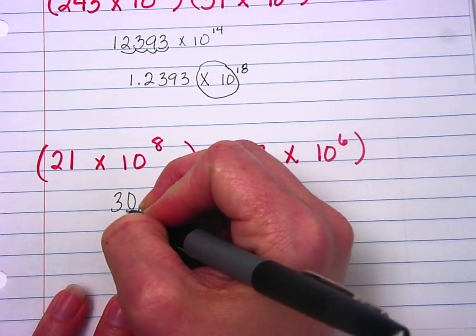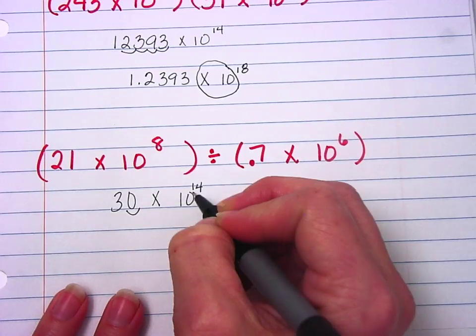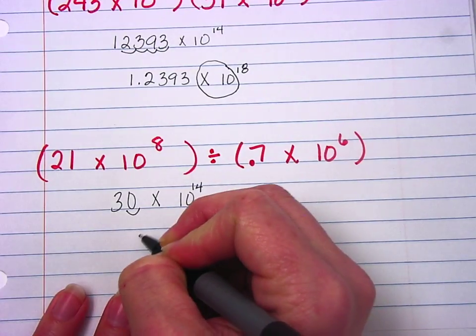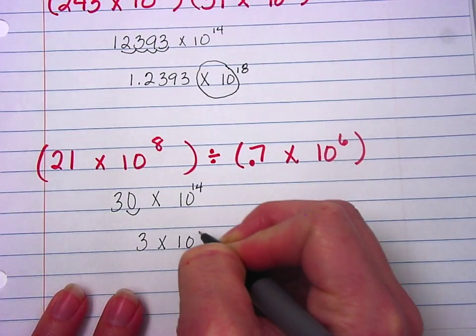14, move my decimal 1 place back. And I'm going to add on an exponent that would give me 3 times 10 to the power of 15.